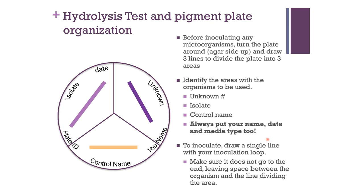Now, I want to bring to your attention how to set up the hydrolysis test and pigment plate organization. Set up your plate similarly to this picture — divide it into 3 or sometimes 4 regions. Label those regions with the appropriate microorganisms: the isolate, the unknown, and the control. Include the control name, plate ID, your name, the date, and make a single streak of bacteria just along the length. Make sure that single streak is nowhere close to the border of the plate so it doesn't contaminate or grow into the next microorganism.